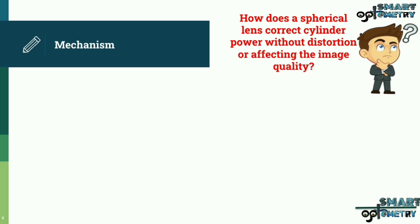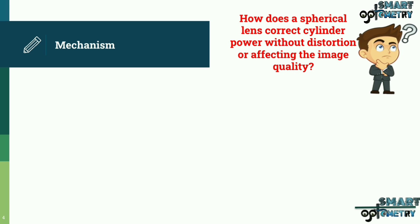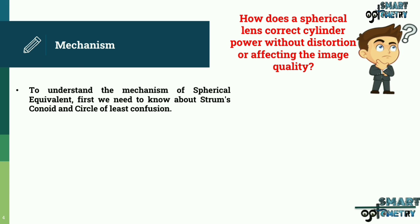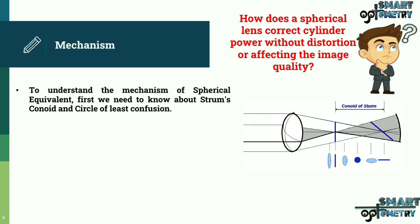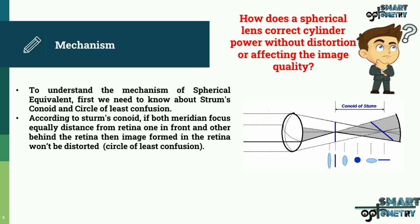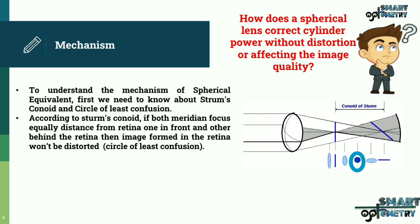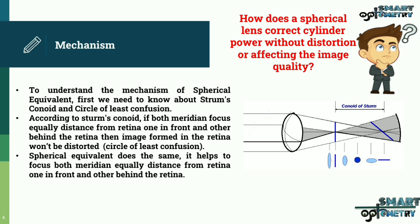How does a spherical lens correct cylinder power without distortion or affecting image quality? To understand the mechanism of spherical equivalent, we first need to know about Sturm's conoid and the circle of least confusion. According to Sturm's conoid, if both meridian foci are equally distant from the retina — one in front and one behind — the image formed on the retina won't be distorted. This condition is called the circle of least confusion.